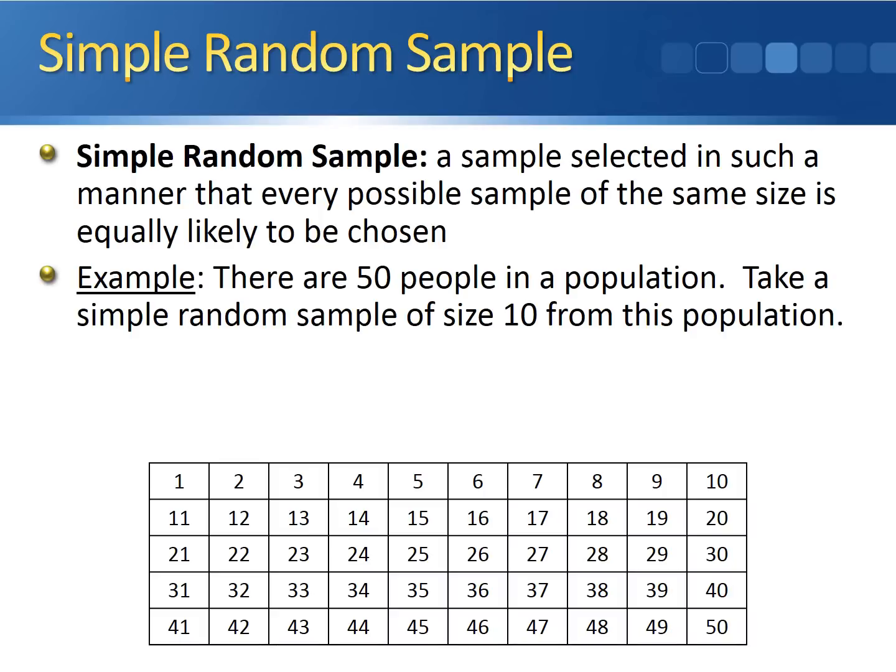If we do this process and we pull out 10 numbers from the hat, the simple random sample would tell us that we're going to sample people 2, 13, 17, 19, 29, 31, 35, 37, 44, and 50. There's absolutely no bias involved. We're literally just putting these numbers into a hat and pulling 10 of them out at random in order to choose our sample that we're going to use.